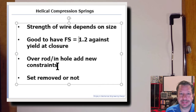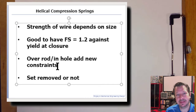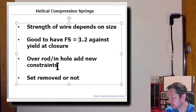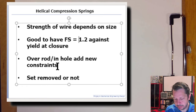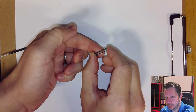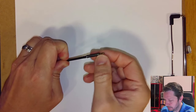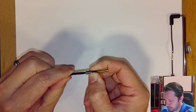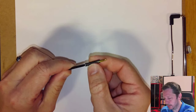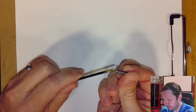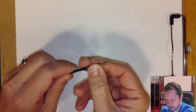When a spring is inside a hole it can't buckle, though you need clearance so it doesn't bind. A rod through the center similarly prevents buckling — like a click pen where the spring by itself is very flimsy and shoots sideways, but when placed over the ink tube you can compress it all the way without buckling. However, the rod means the coils have a minimum diameter, adding constraints while eliminating others.